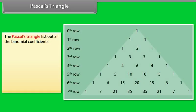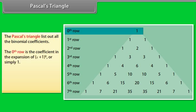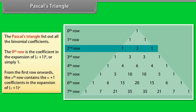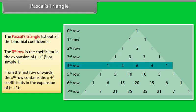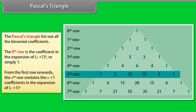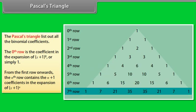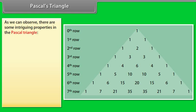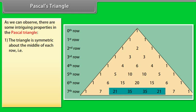Pascal's triangle lists out all the binomial coefficients as shown in the figure. The zeroth row is the coefficient in the expansion of (x + 1) raised to power 0, or simply 1. From the first row onwards, the nth row contains the n + 1 coefficients in the expansion of (x + 1) raised to power n. As we can observe, there are some intriguing properties in Pascal's triangle. The triangle is symmetric about the middle of each row.